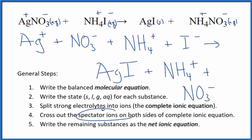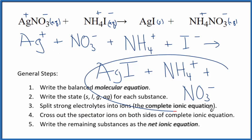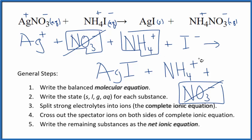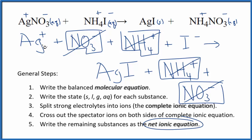Now we can cross out the spectator ions — they're on both sides. I have my reactants and my products. I see a nitrate ion in the reactants and in the products — spectator ion, cross it out. I have an ammonium ion in the reactants and in the products — cross it out. What's left is our net ionic equation for AgNO3 plus NH4I.